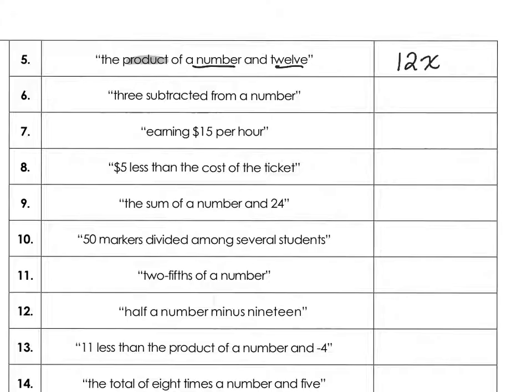For number 6, we have 3 subtracted from a number. This is a turnaround phrase. So 3 is being subtracted from the number, so it's going to be x take away 3.